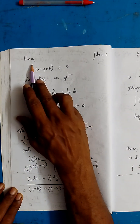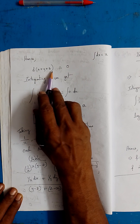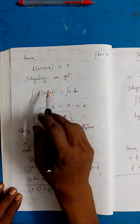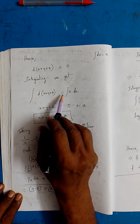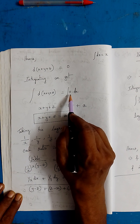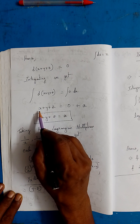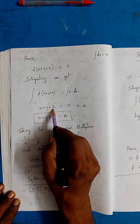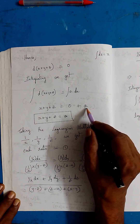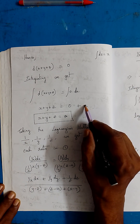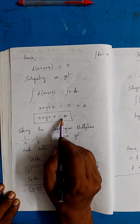Hence d(x+y+z) = 0. Integrating both sides, x + y + z = a, where a is an arbitrary constant. This gives us the first part of the solution.